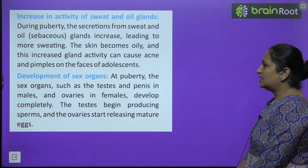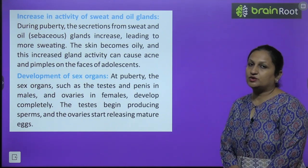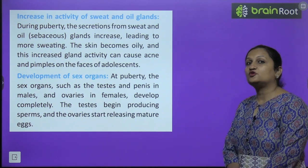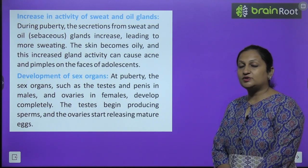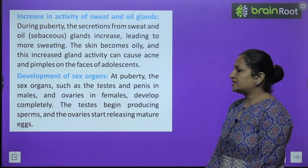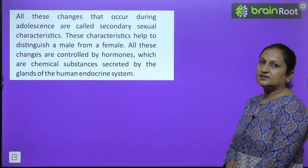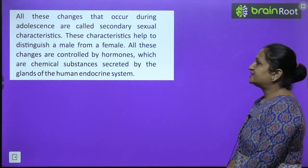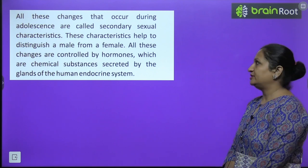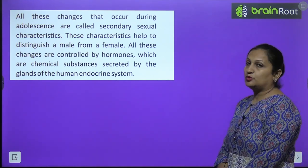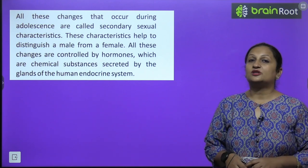Development of sex organs: at puberty, sex organs such as testes and penis in males, and ovaries in females, develop completely. The testes become functional and start producing sperms; similarly, ovaries also become functional and start producing eggs. All these changes that occur during adolescence are called secondary sexual characters. These characteristics help to distinguish a male from a female, and all these changes are controlled by hormones.